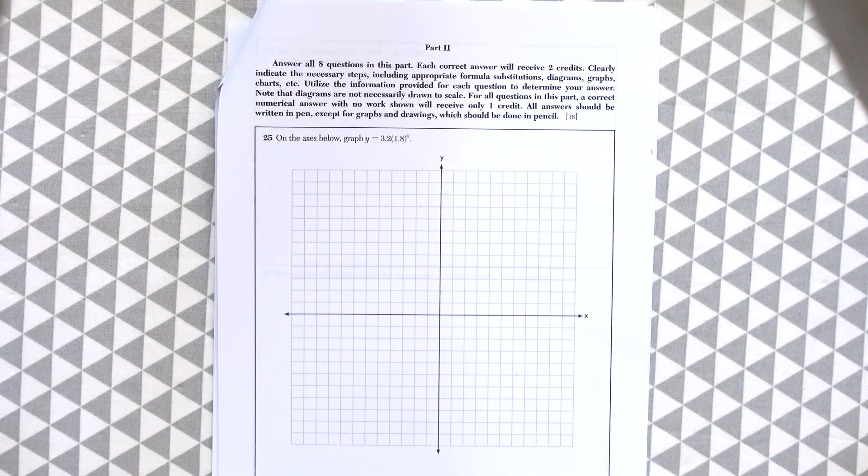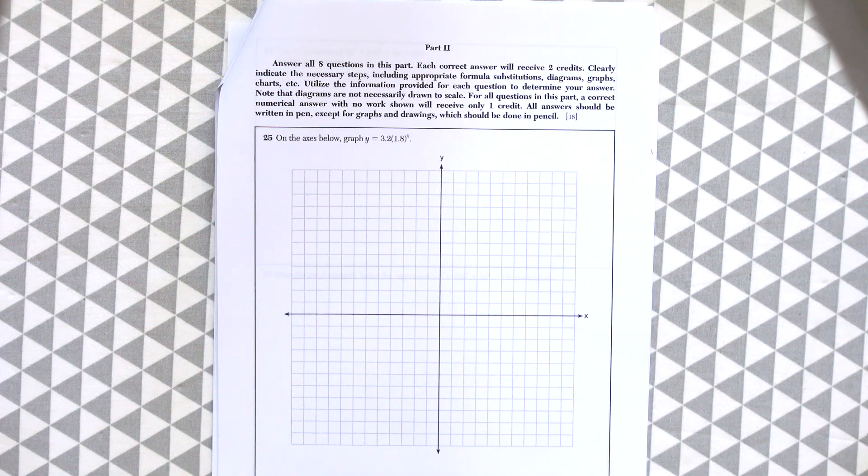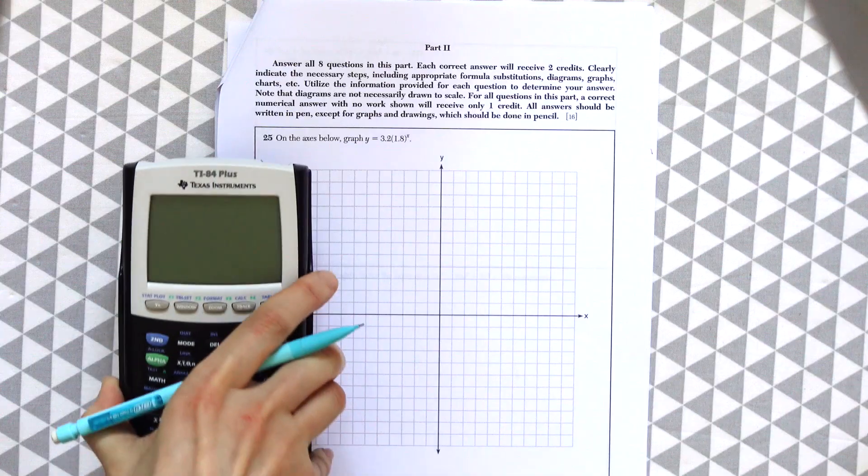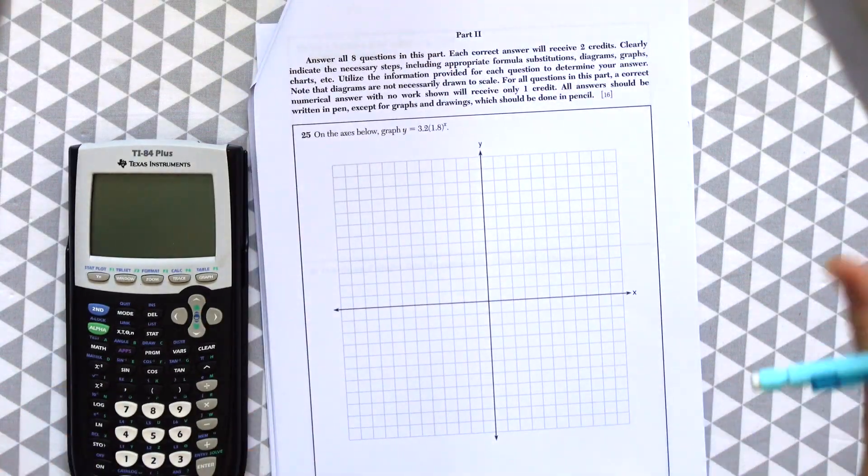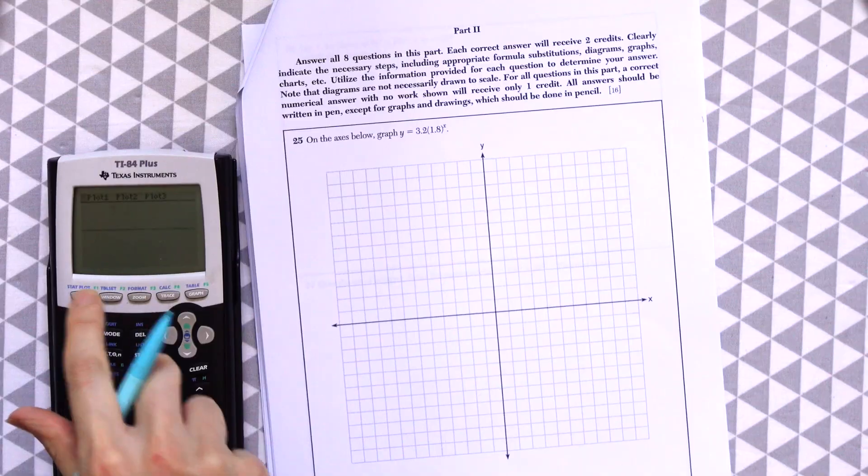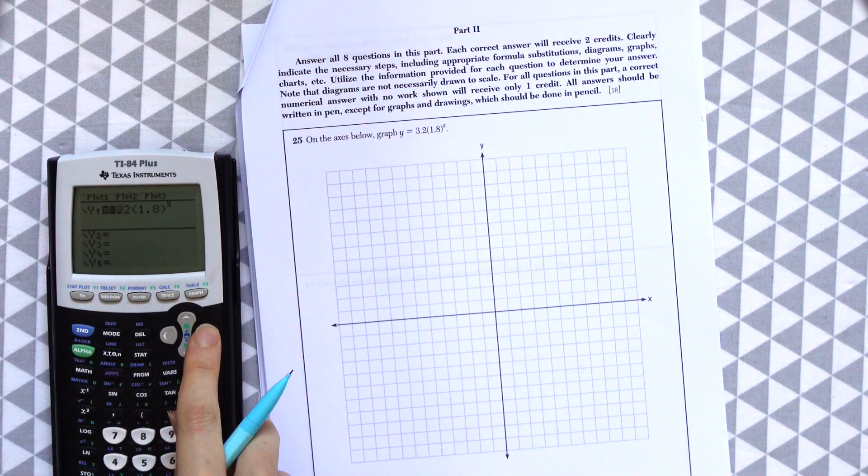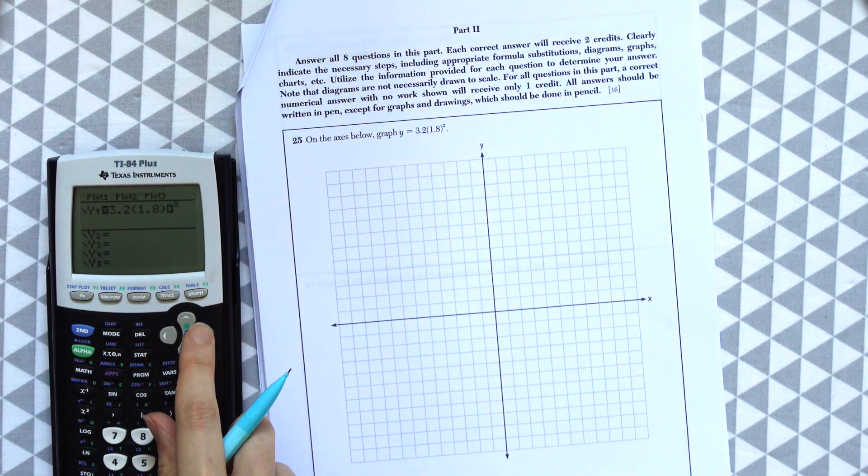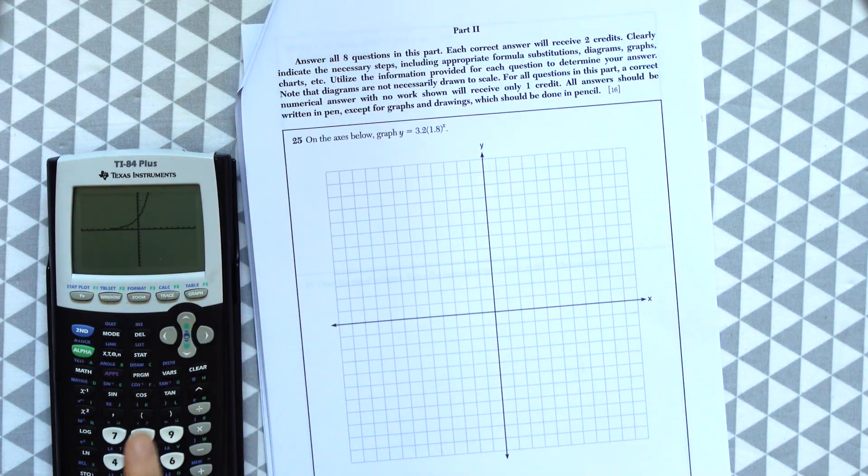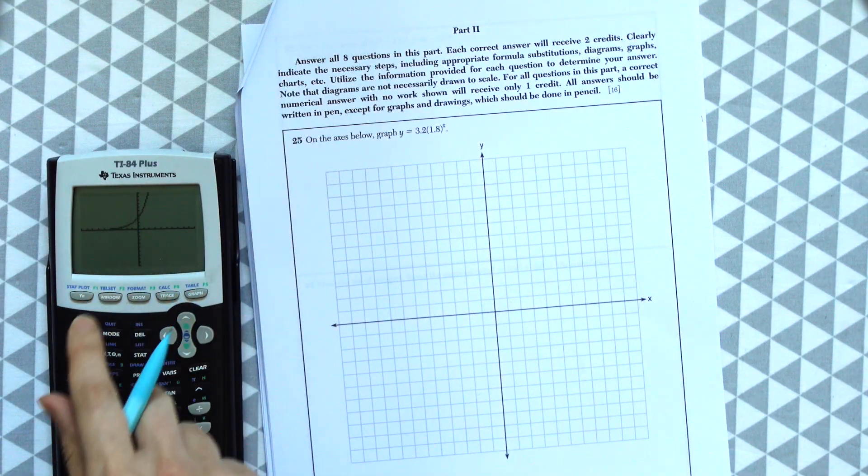On the axis below, graph y equals 3.2 times 1.8 to the x. So I'm going to take out my calculator, go to y equals, and then plug this in: 3.2 times 1.8 to the x. Then we can hit graph and see we're going to draw something like this.